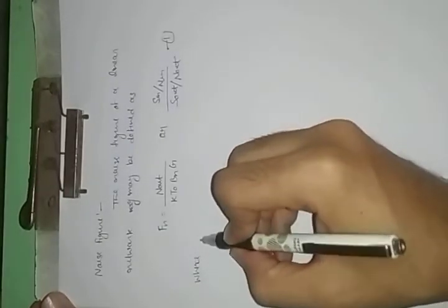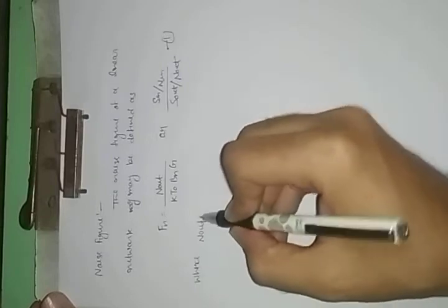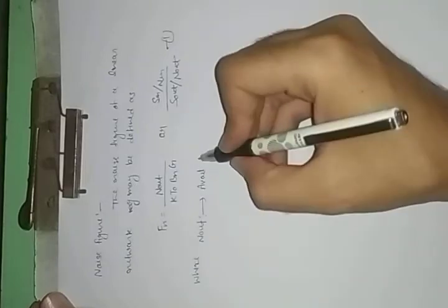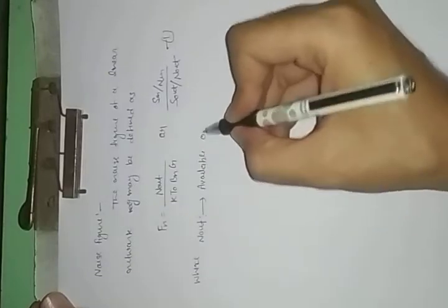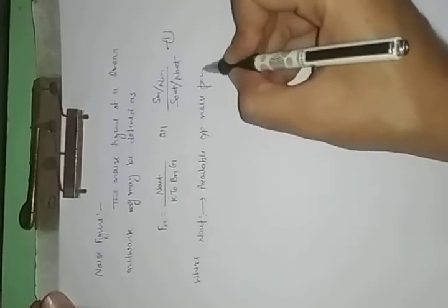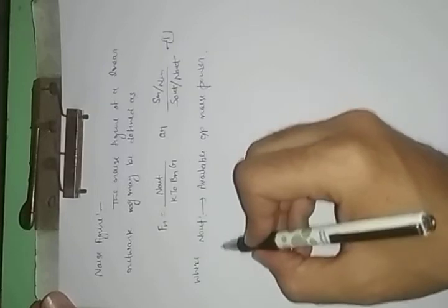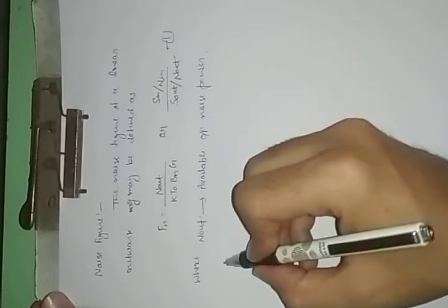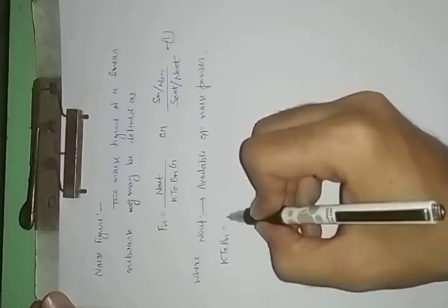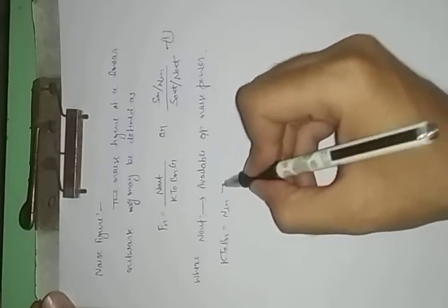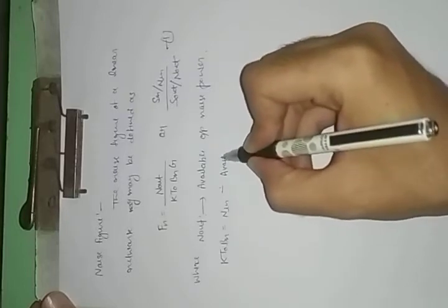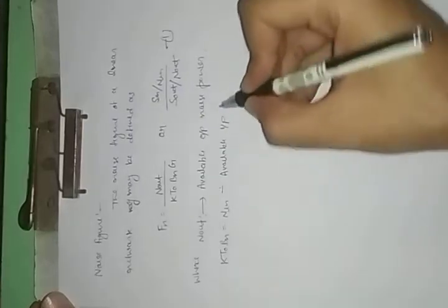Where N out represents Available Output Noise Power. KT not Bn also represents N in, this is the Available Input Noise Power.